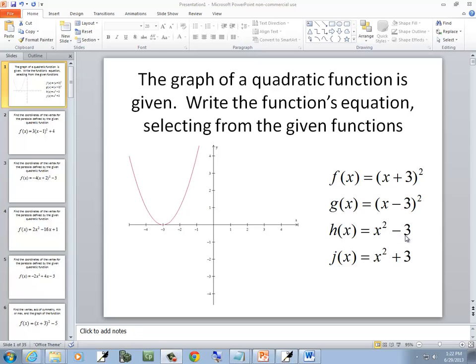h(x), the minus 3 is at the very end, which means it's been shifted down 3. And j(x) is a plus 3, which is at the very end, so that means it's up 3.